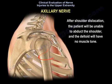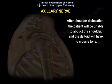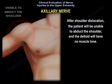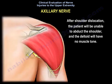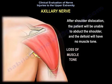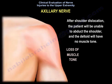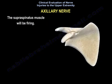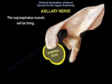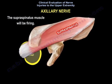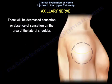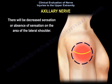After shoulder dislocation, the patient will be unable to abduct the shoulder and the deltoid will have no muscle tone. The supraspinatus muscle will be firing, and you will have decreased sensation or absence of sensation on the area of the lateral shoulder.